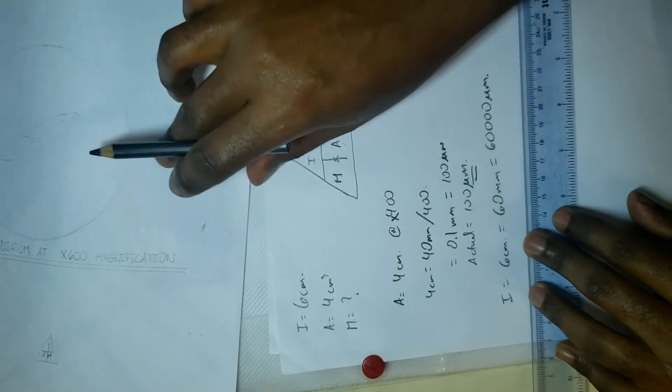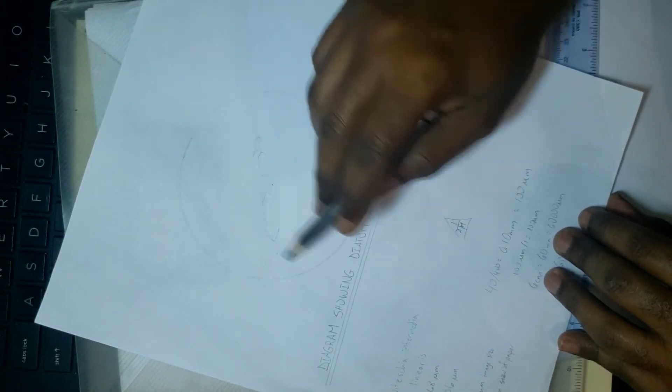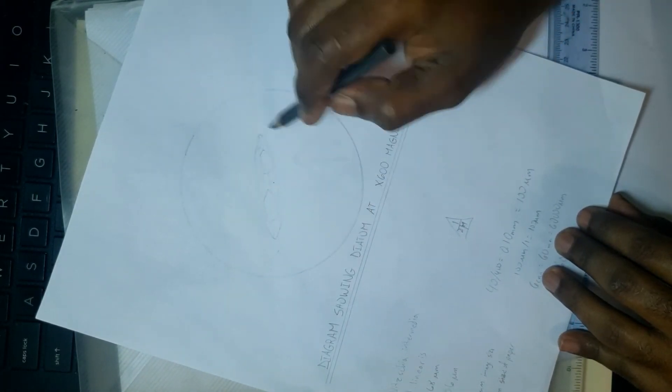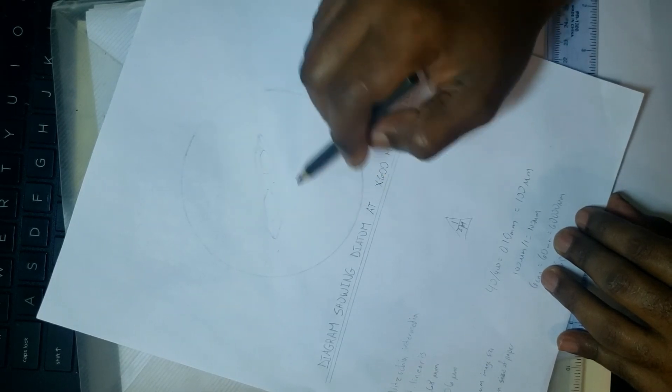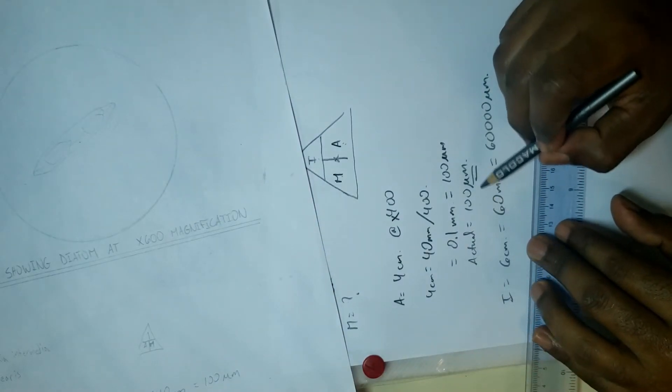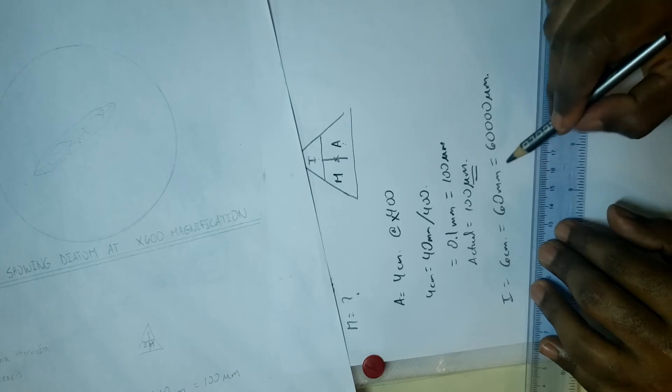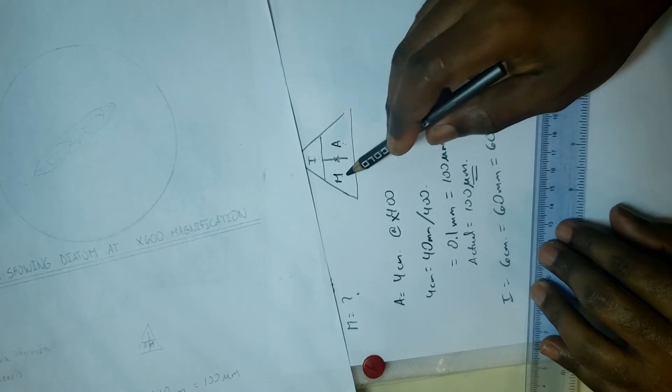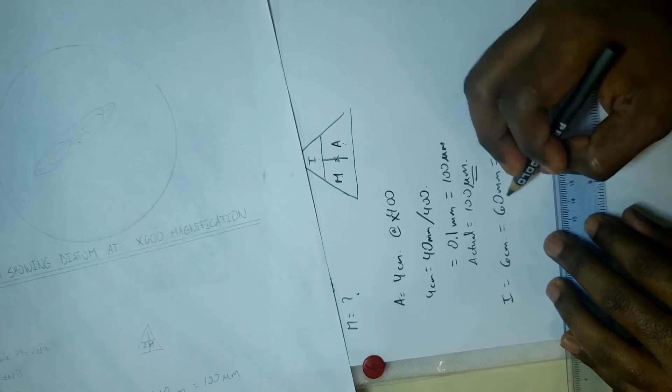It's one cell in the entire diameter that we have here, so one specimen for the area that we're viewing. We know exactly that is 100 micrometers, and now we know the image size. To find the magnification now, you just do the image divided by the actual.